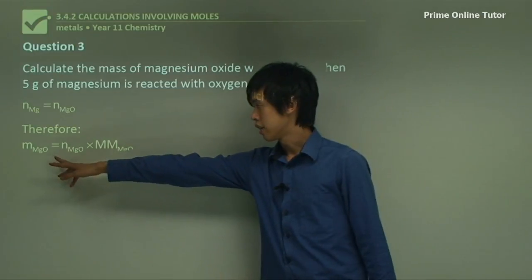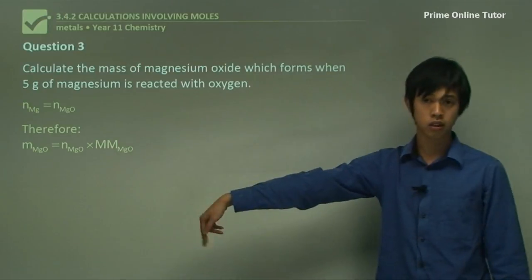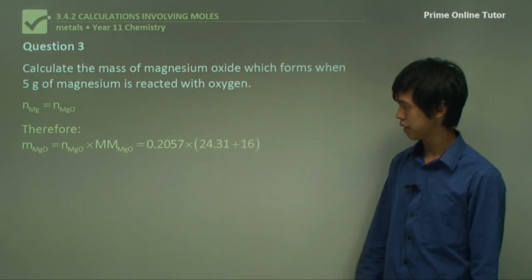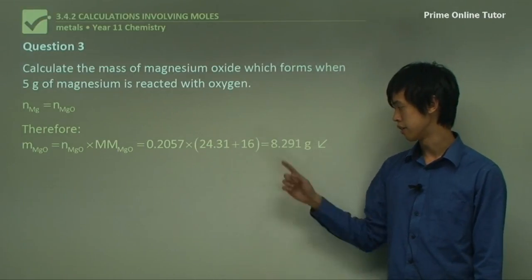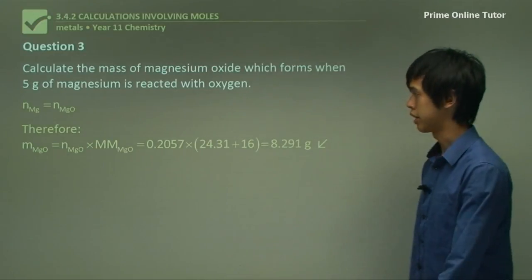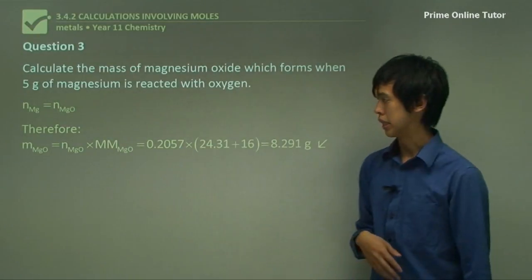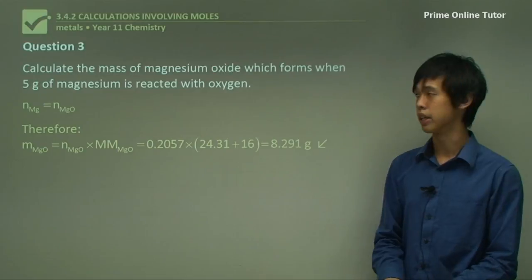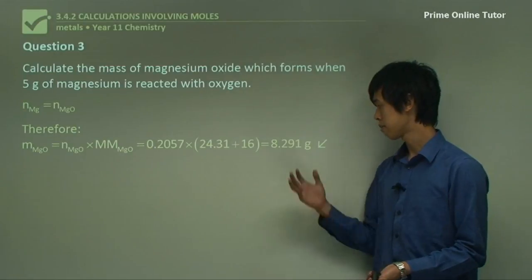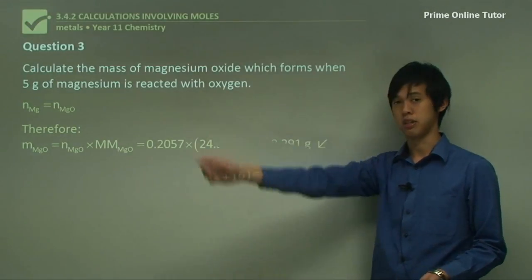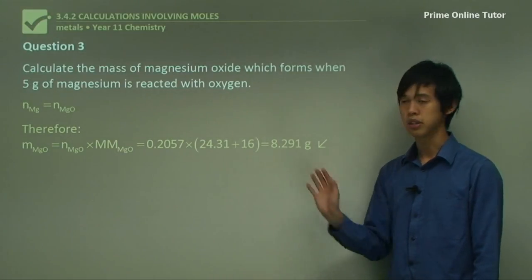The equation says that the number of moles of magnesium equals the number of moles of magnesium oxide. And therefore the mass of the magnesium oxide is just equal to the number of moles of magnesium oxide times the molar mass of the magnesium oxide. So 0.2057 times 24.31 plus 16 gives you 8.291 grams. So that's how much comes out, assuming we put 5 grams of magnesium in. And if you do the conservation of mass thing again, the amount of oxygen we used was 3.291 grams. So this is how we use moles to calculate other things.